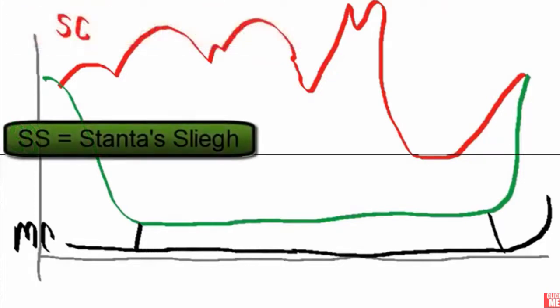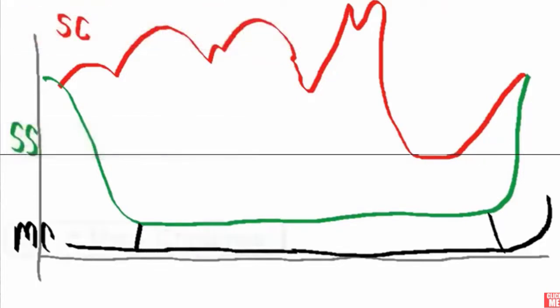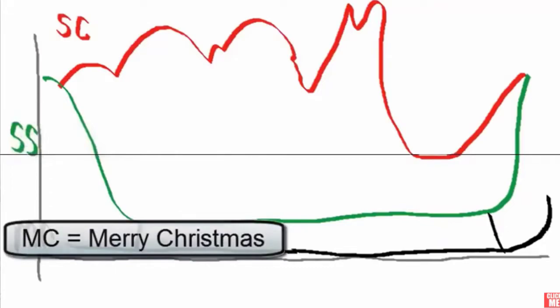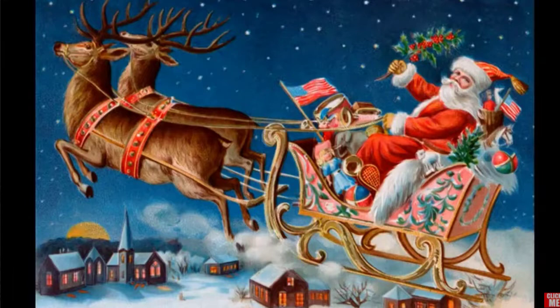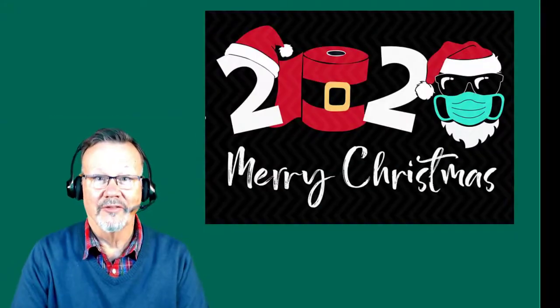So if you haven't figured it out by now, folks, the stock is SC. It is really Santa Claus, and the SS indicator is that of Santa's sleigh, and the MC indicator is that of Merry Christmas to all and to all good trading. This is Mark the Meerkat. Merry Christmas.